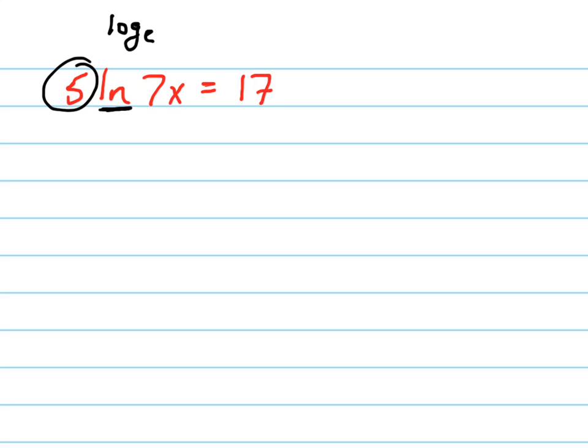So first of all, I need to get rid of the 5, and I do that by dividing it. So there's my next equation: ln of 7x equals 17 over 5.